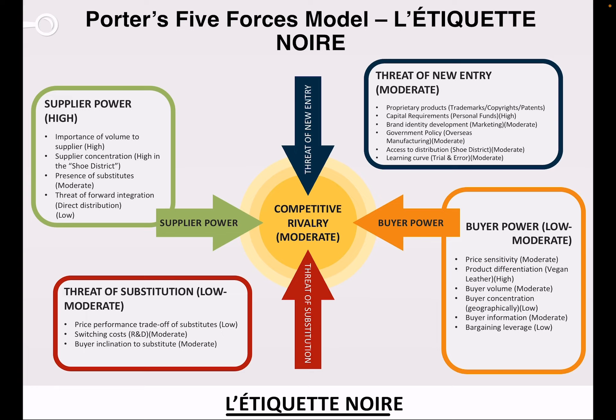Next is the threat of substitution. We've also rated this low to moderate. You have to look at price performance and trade-offs of substitutions. Right now this is low because we are a grassroots movement and the word hasn't really taken off amongst the masses. We also have to look at the switching costs, which ties into research and development. We rated this as moderate because we want to make sure we get the product into the customer's hands. The switching costs when looking at one brand versus another is pretty moderate within this field. Next is the buyer inclination to buy a substitute — when they look at Legiquette Noir brands versus other brands, are they more inclined to stick with Legiquette Noir and purchase it?